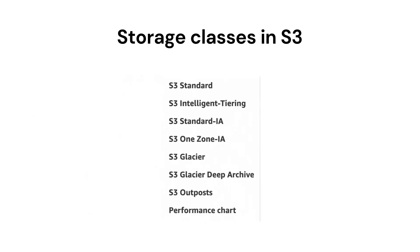Our next question is about storage classes in S3. Let's see the storage classes in a high-level view. First, S3 Standard — this is a general-purpose storage for any type of data, typically used for frequently-accessed data. Second is S3 Intelligent Tiering — this is an automatic cost-saving option for data with unknown or changing access patterns. Third is S3 Standard Infrequent Access — this class is for data which is long-lived but infrequently accessed, but when we need the data, it should be available in a few milliseconds.